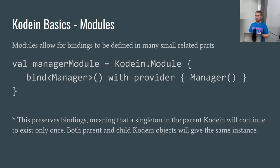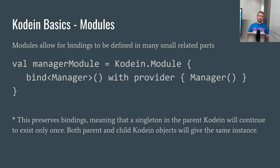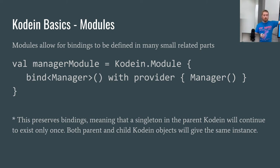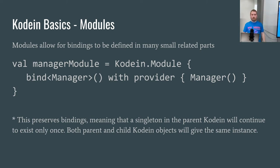Modules. As I mentioned before, modules let you define your dependencies in Kodein. You can define modules anywhere you want and as many as you want. The Kodein object provides facilities to define which modules should be brought in at which times. Here we've defined a module — everybody remembers the provider definition — and this is now a valid DI object that we can use.